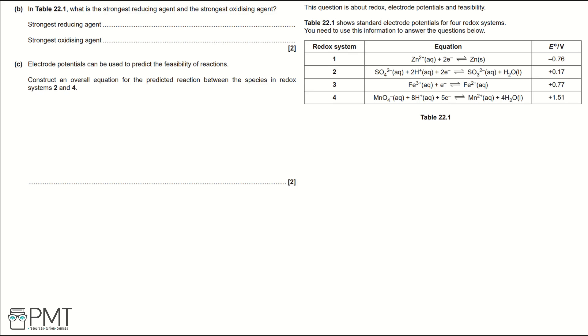Part B, in table 22.1 what is the strongest reducing agent and the strongest oxidising agent? If we look at the most positive electrode potential and the most negative electrode potential, that will help us find the strongest reducing and oxidising agents. The most positive is redox system 4 at 1.51 and the most negative is redox system 1 at minus 0.76. So if we look at these in more detail, redox system 1, for example, this would go backwards because it's more negative.